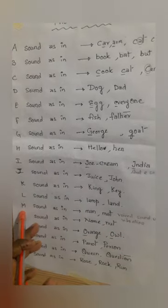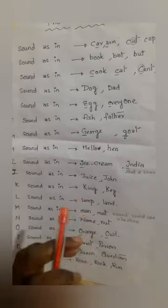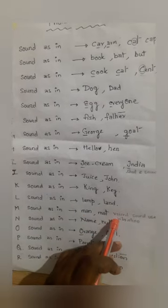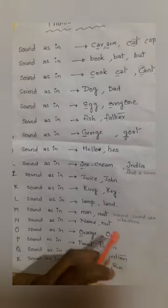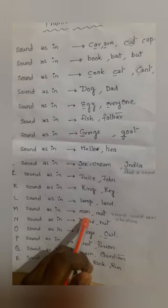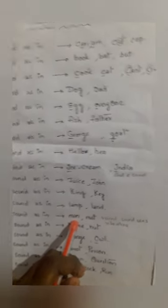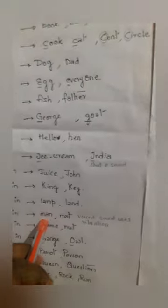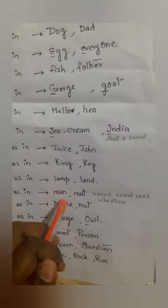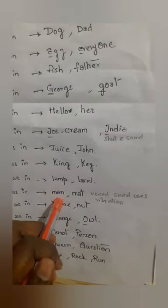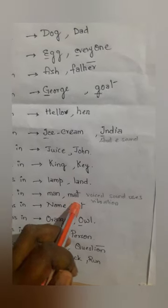In the letter M, the sound is 'm'. So it is a voiced sound — it uses vibration. So when you sing a song, you hum, right? You will be saying 'm'. Like that, you should pronounce the letter M — M, A, N — man. M, A, T — mat.